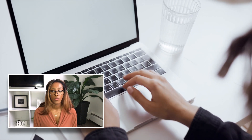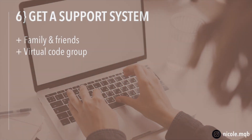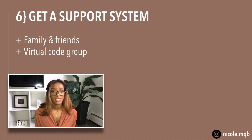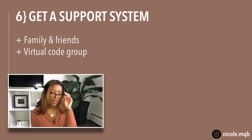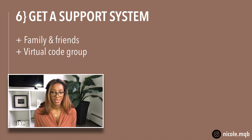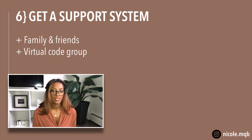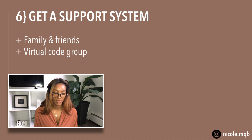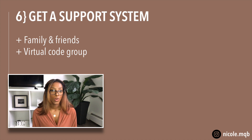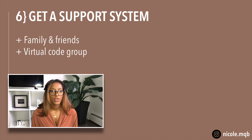Number six: get a support system — whether that's family, friends, a partner, whoever. Let them know what's going on so they can encourage you along the way. Be careful who you tell; if there are people who might discourage you, figure that out for your own situation. You also want to get support by joining a virtual or local coding group. For me, this was the whole difference between even getting a job. I joined a women's coding group in my city — we were meeting locally twice a month.